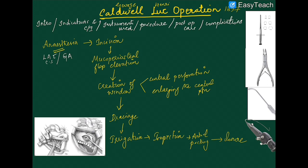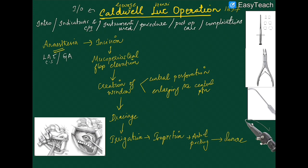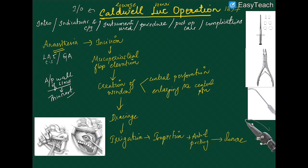After administering the anesthetics, you proceed to the initial incision. The Caldwell-Luc operation is an intraoral procedure — you are going to create a window or a hole in the canine fossa, right above the canine tooth, to gain access into the sinus. We select this region because the anteroposterior wall of the sinus is thinnest in the canine fossa, making it easy to create a window.